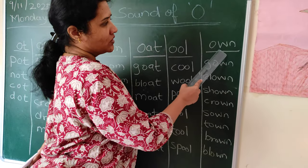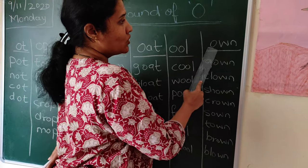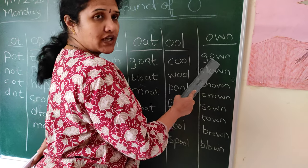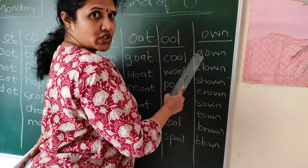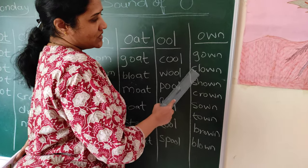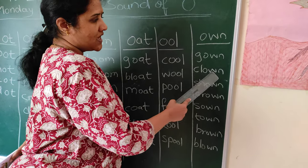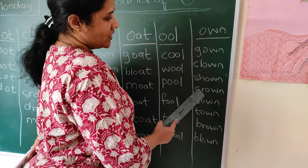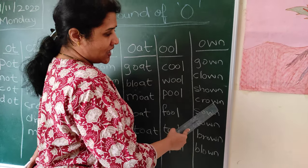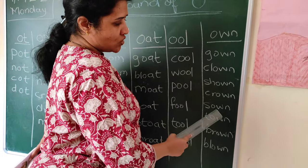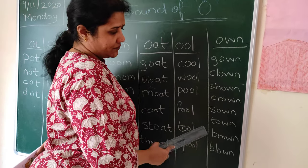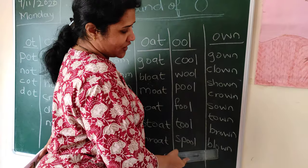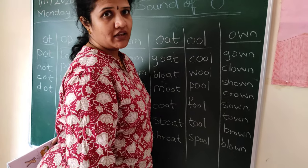Now next: OWN. G-O-W-N — GOWN. C-L sound is CL, CL plus OWN is CLOWN. S-H-O-W-N — SHOWN. C-R is CR, CR plus OWN is CROWN. T-O-W-N — TOWN. B-R-O-W-N — BROWN. B-L-O-W-N — BLOWN. Thank you.